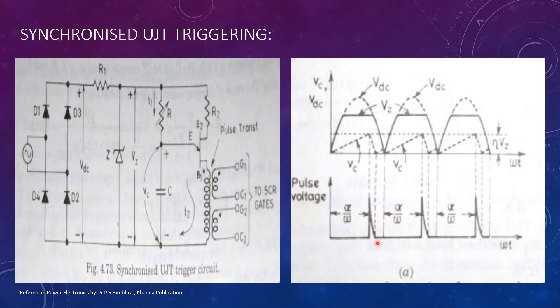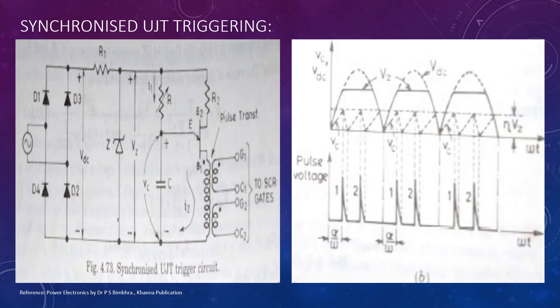In case R is reduced so that VC reaches UJT threshold voltage twice in each half cycle, as shown in the figure, there will be two pulses in each half cycle. As the first pulse will be able to turn on the SCR, the second pulse in each cycle is redundant. Thank you all.